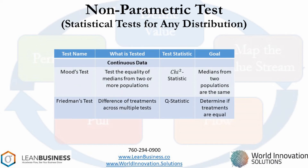There may be times when you are more concerned about medians than means, and your distribution is not normal. For instance, a median is less sensitive to outliers. That's the time to use Mood's test. An example might be that you have three assembly lines and you measure their lead times, then use Mood's test to determine whether there are true differences between the different lines' performance.